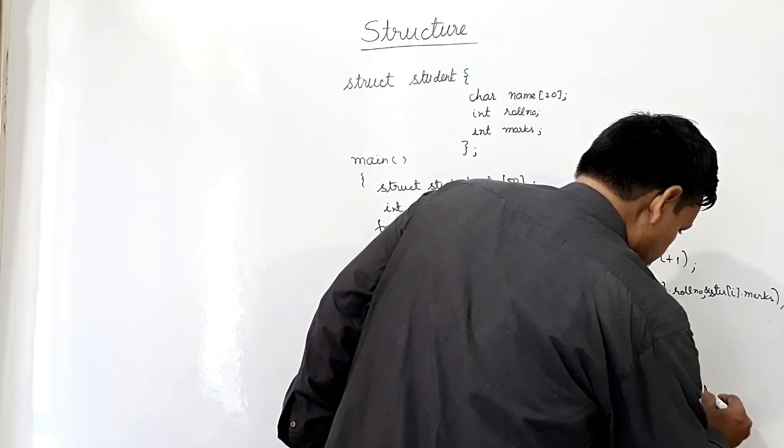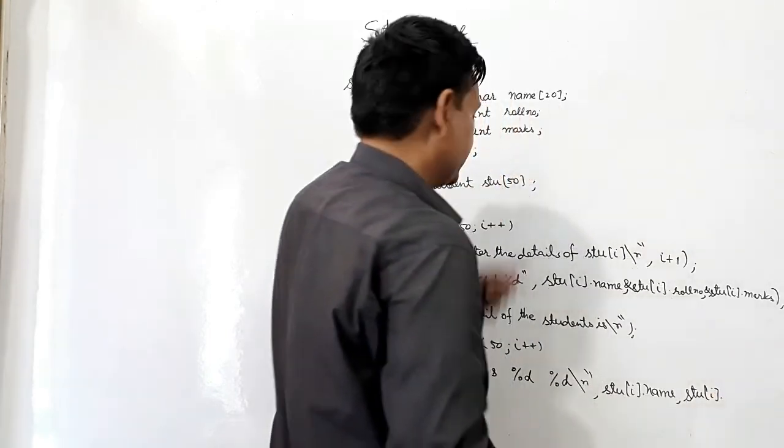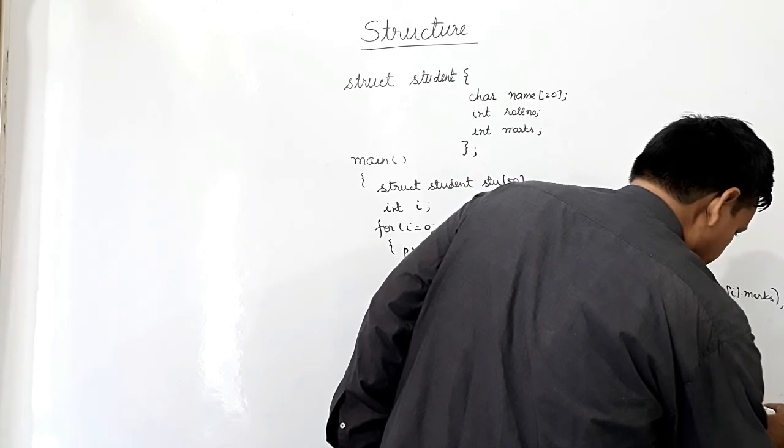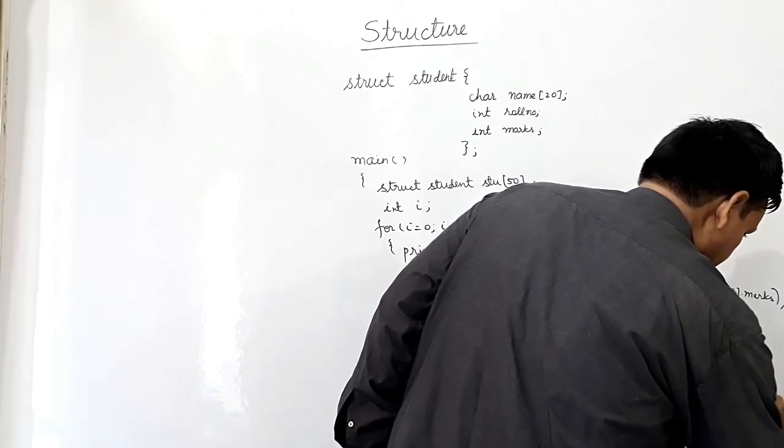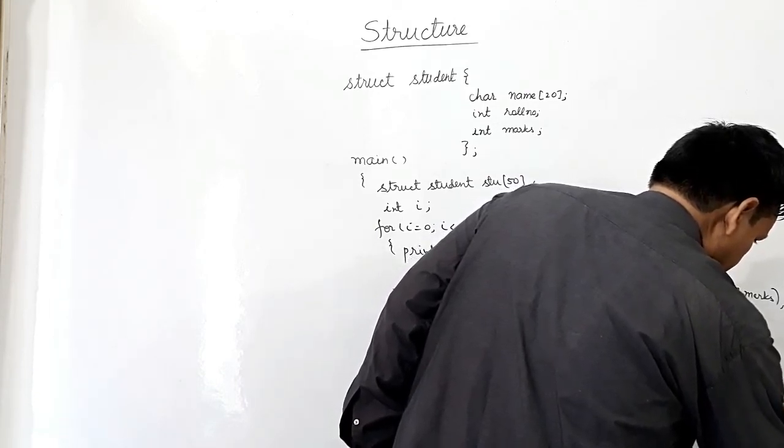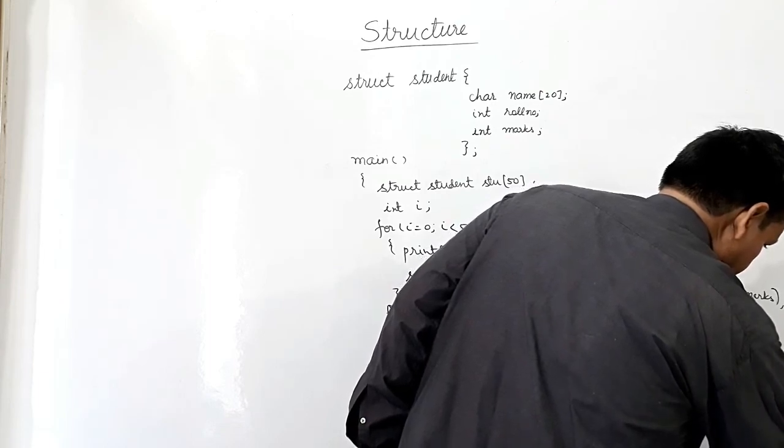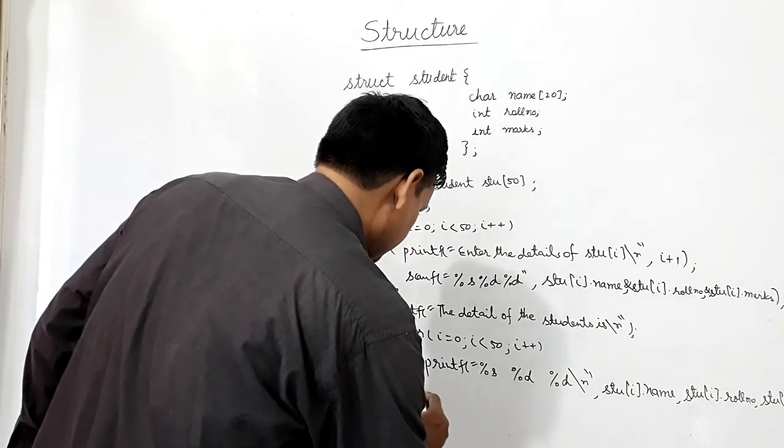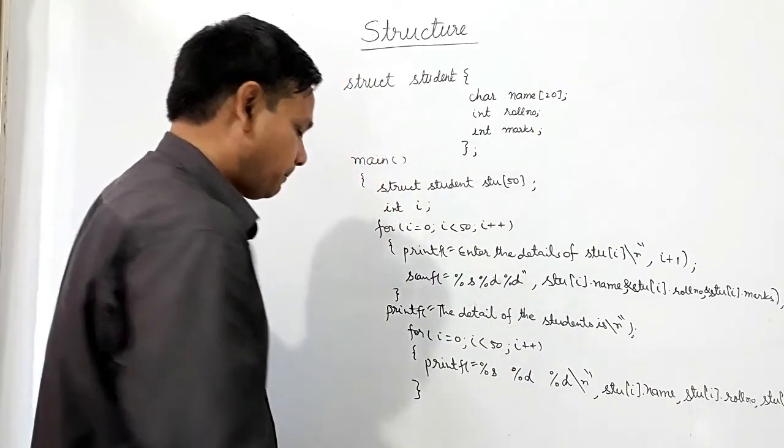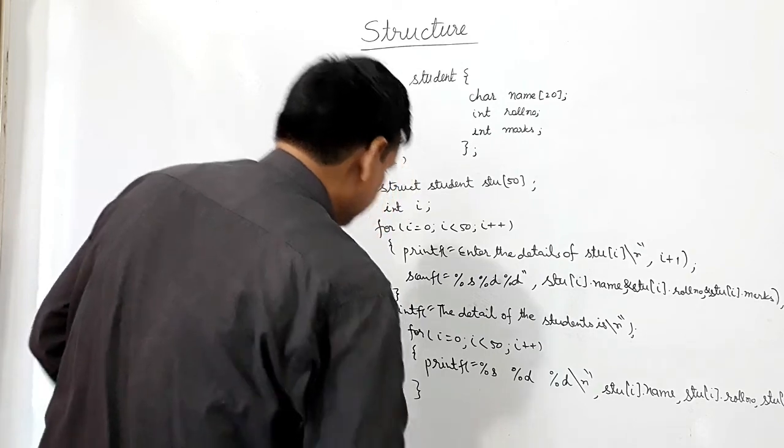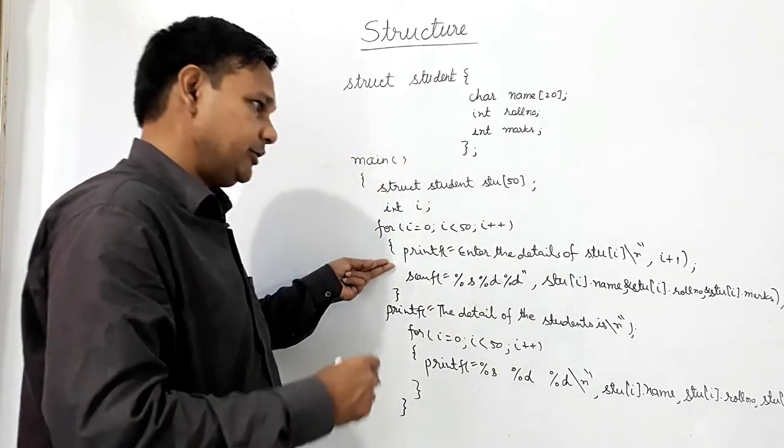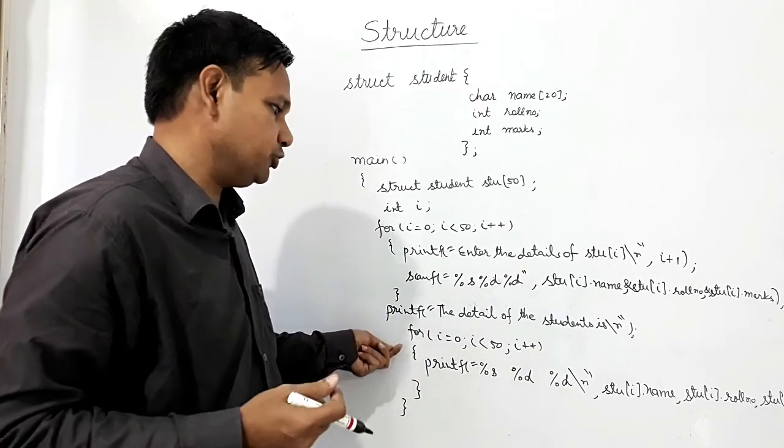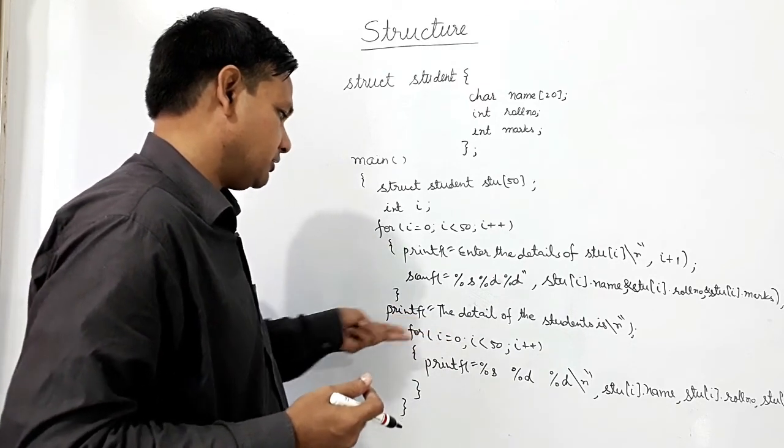Stu[i] dot - so in this way it will be. In this way it will be input and here we shall get the output using this logic.